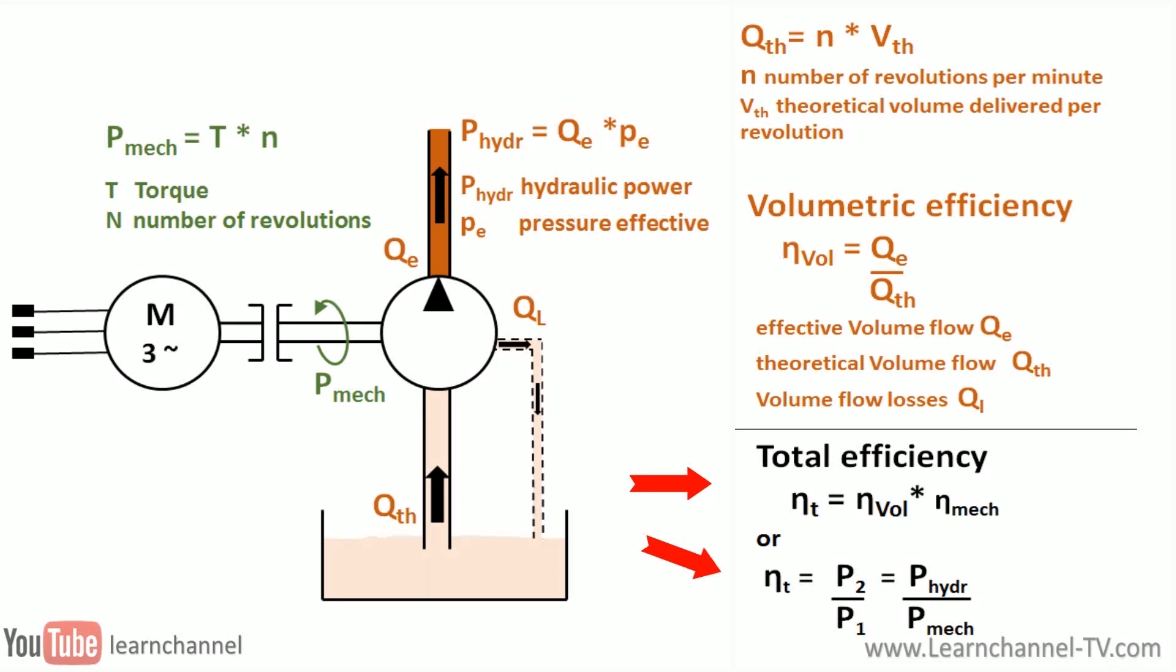So the total efficiency can be determined by two ways, either via the multiplication of the mechanical and the volumetric efficiency, or via the relation between output and input power of the pump.